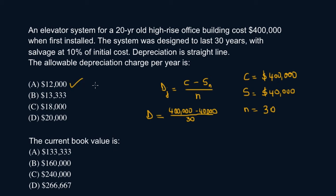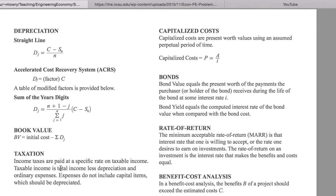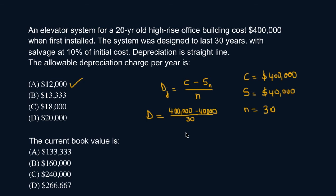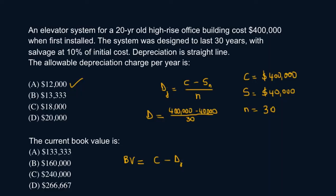Now second part of the question, current book value. Let's go back to our formula sheet and look at the formula for book value. So book value is given as initial cost minus the sum of your depreciation. So let's put that over here. Book value is your cost, initial cost minus sum of your DJ, sum of your depreciation. So here we have everything that we need.